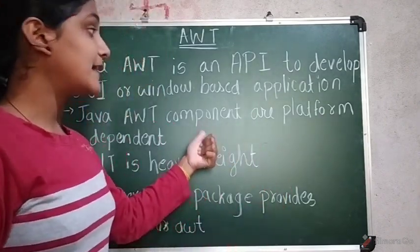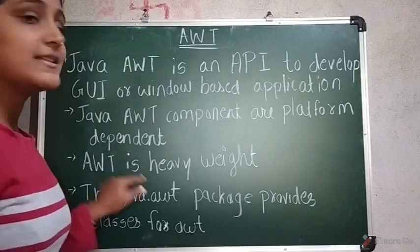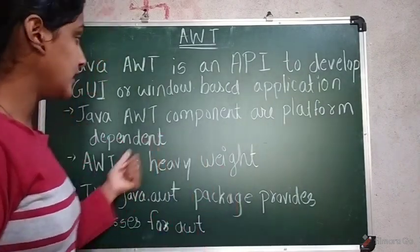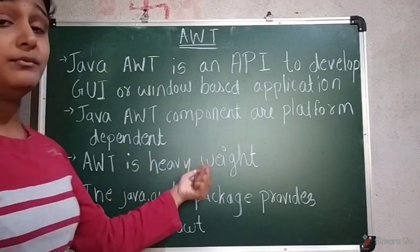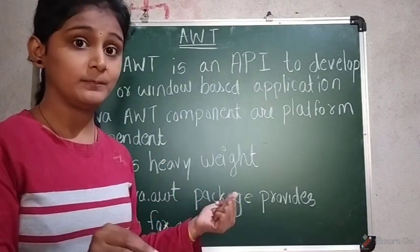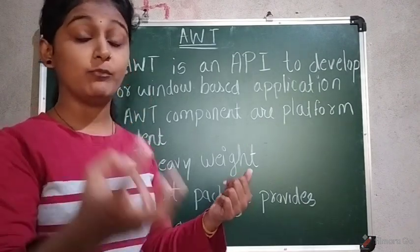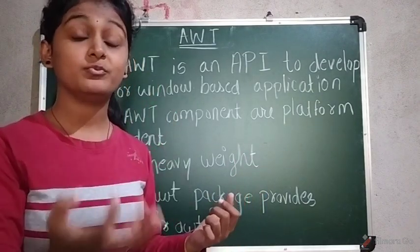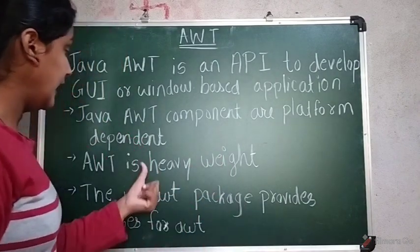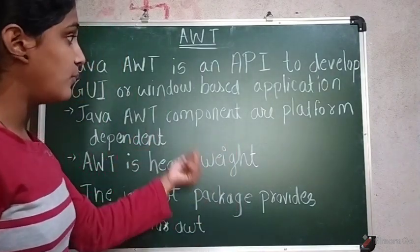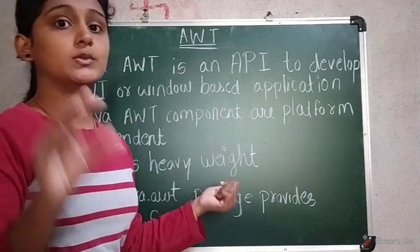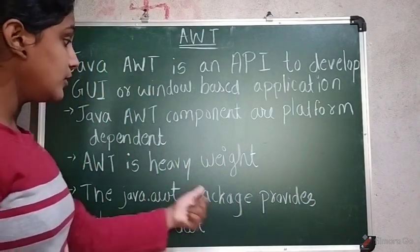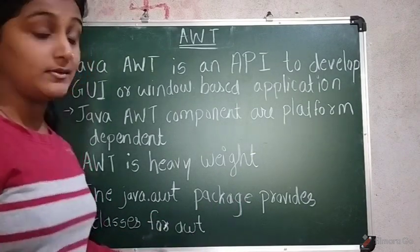The third point is that AWT is heavyweight. Whatever components are there, they are heavyweight. The reason is that the memory required for components like buttons or text fields is more. So AWT is heavyweight — note down this point because MCQ questions come from this.